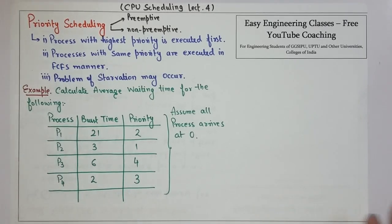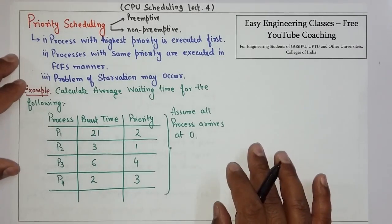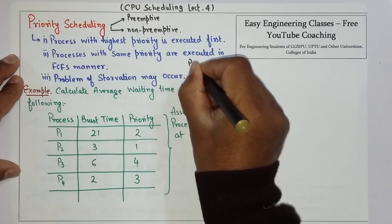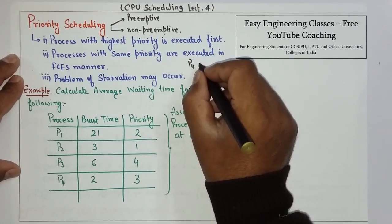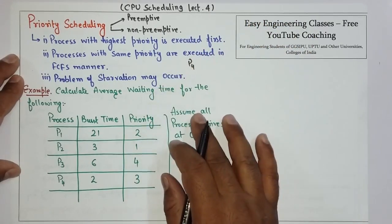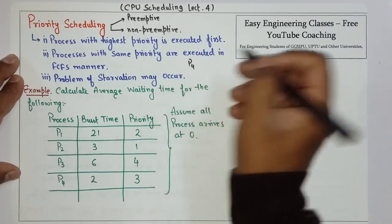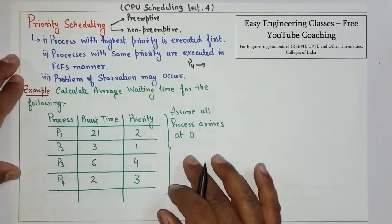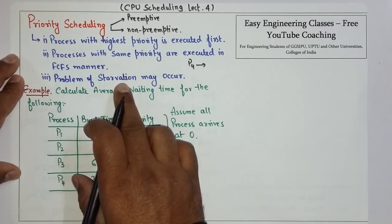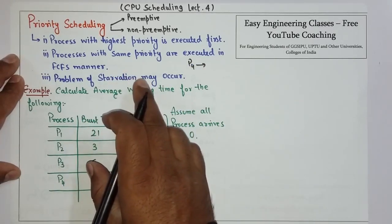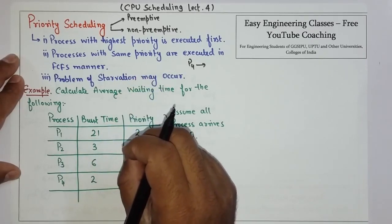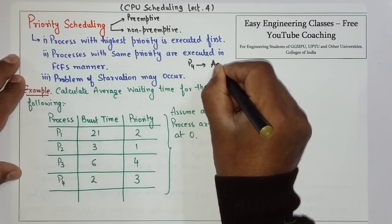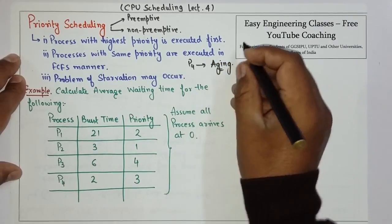In priority scheduling there is a problem which is known as starvation. What happens is that a process enters the ready queue — say process P4 — and its priority is so low that every time a new process arrives in the ready queue with higher priority, P4 will starve to death. Starvation is the problem in which a low priority process can be blocked infinitely if high priority processes arrive in the ready queue frequently.